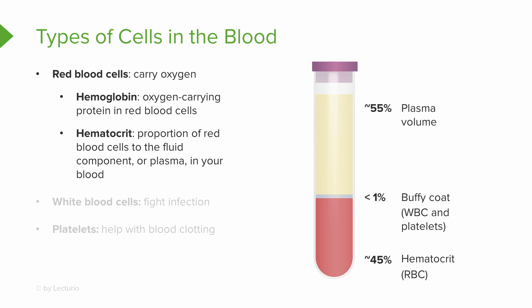We've looked at the first cells — the red blood cells — and we know their job is to carry oxygen. Now the white cells are the infection fighters; that's what they do. And the platelets help with blood clotting, and that's a good thing. Remember our trauma patient? We want their blood to be able to clot so they can stop the bleeding and hemorrhaging and hang on to their blood volume.